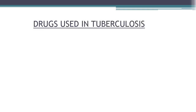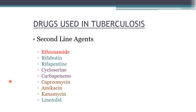Now a quick overview of second-line agents — your homework is to memorize their names. Second-line agents are used when patients cannot tolerate first-line drugs or when the mycobacteria is resistant to them. These drugs include ethionamide, rifabutin, rifapentin — rifamycin derivatives — cycloserine and carbapenems — cell wall synthesis inhibitors — and capreomycin, amikacin, kanamycin — aminoglycosides and injectable second-line agents.